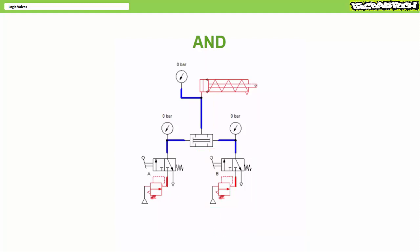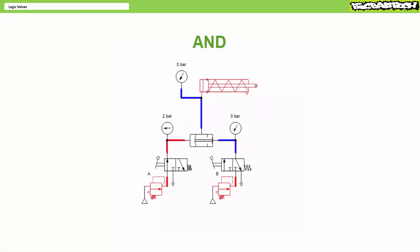Recall an AND valve behaves as follows: there must be a pilot signal at both inputs A and B for there to be an output. Additionally, when both air pilots A and B are present, it selects the lowest of the two pressures. When neither A nor B receive an air pilot signal, the AND valve produces no output. When only A receives a signal, no output. When only B receives a signal, no output. Only when both A and B receive an air pilot signal does the AND valve produce output. You will note the AND valve selects the lowest of the two pressures, notably A at 2 bar.